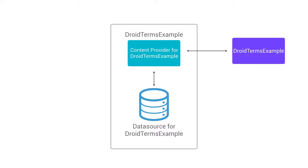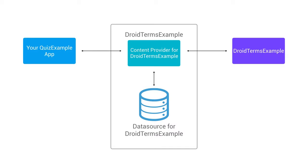So we've looked at Droid Terms Example. Now, imagine that you want to make an app that quizzes users on the definition of the Android words in Droid Terms Example. Droid Terms Example has all of this word and definition data already, but how can you actually access it? Well, since whoever made Droid Terms Example used a content provider, you can easily access all of this data in your own app. So what you're actually going to be doing is making an app called Quiz Example. It shows the first word stored in Droid Terms Example's data, but with no definition. You can then click Show Definition to reveal what the definition is, and then Next Word to go on to the next word.